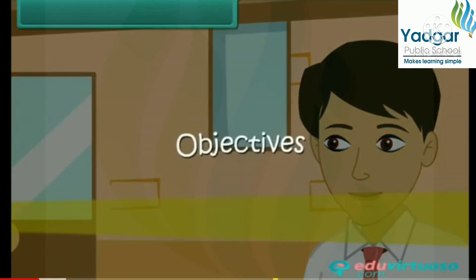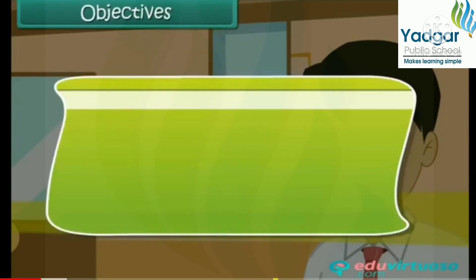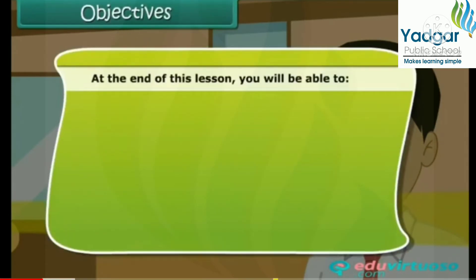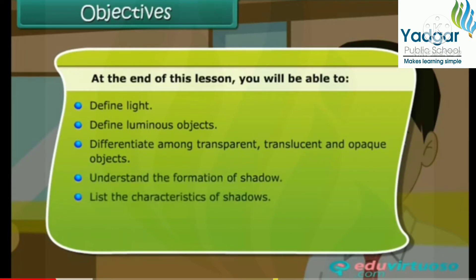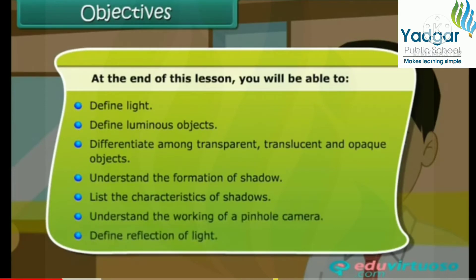Objectives. At the end of this lesson, you will be able to: define light, define luminous objects, differentiate among transparent, translucent and opaque objects, understand the formation of shadows, list the characteristics of shadows, understand the working of a pinhole camera, and define reflection of light.